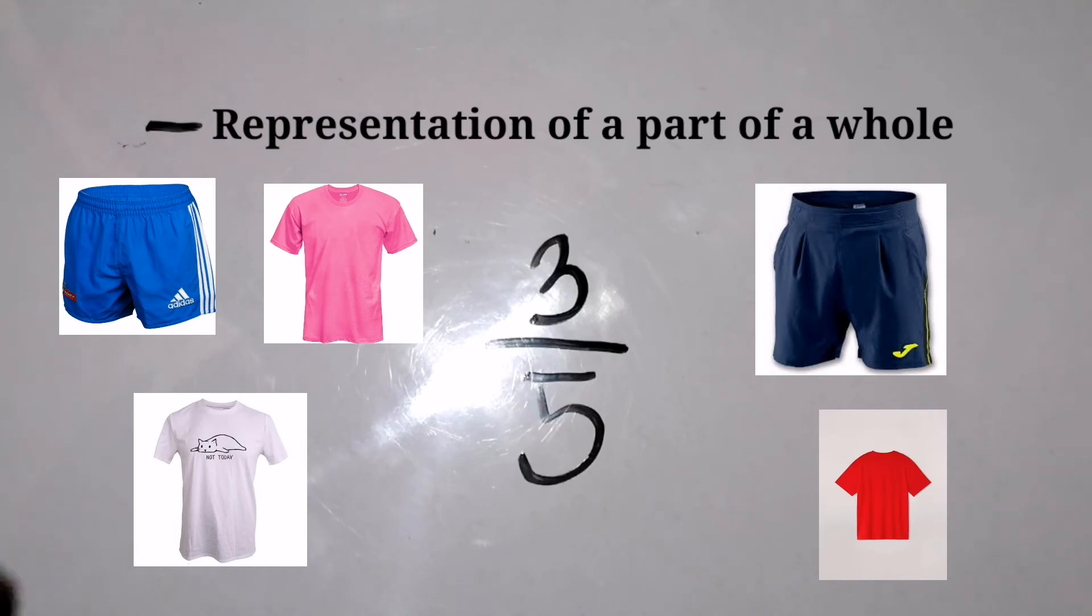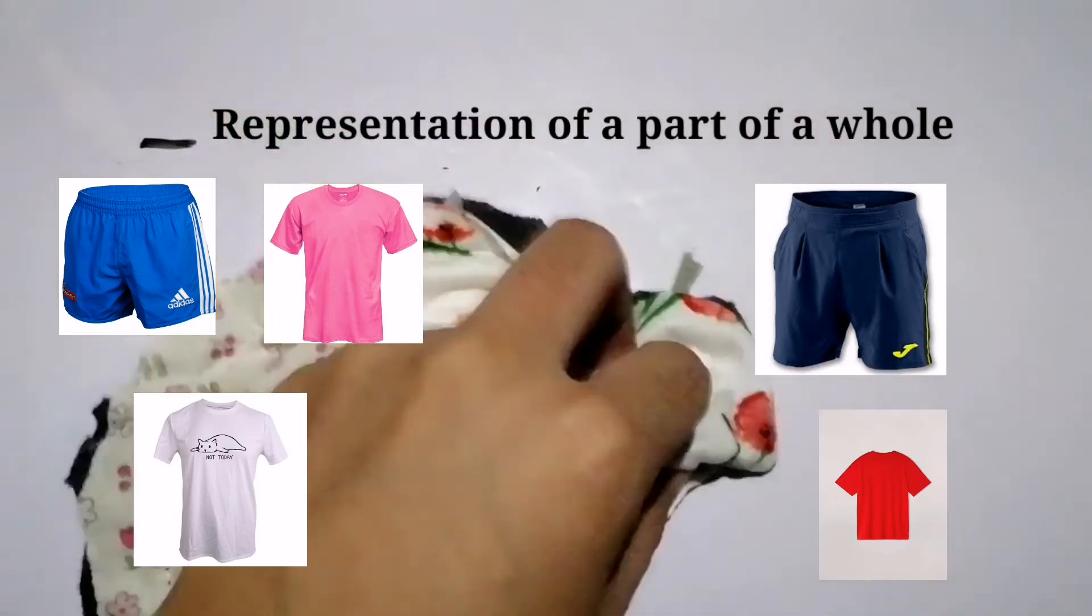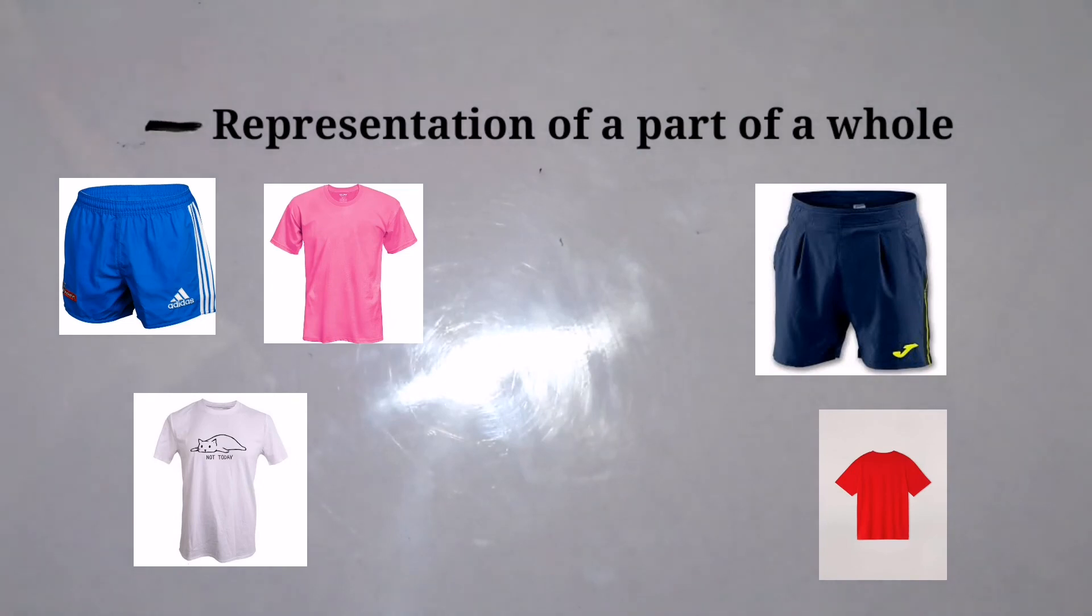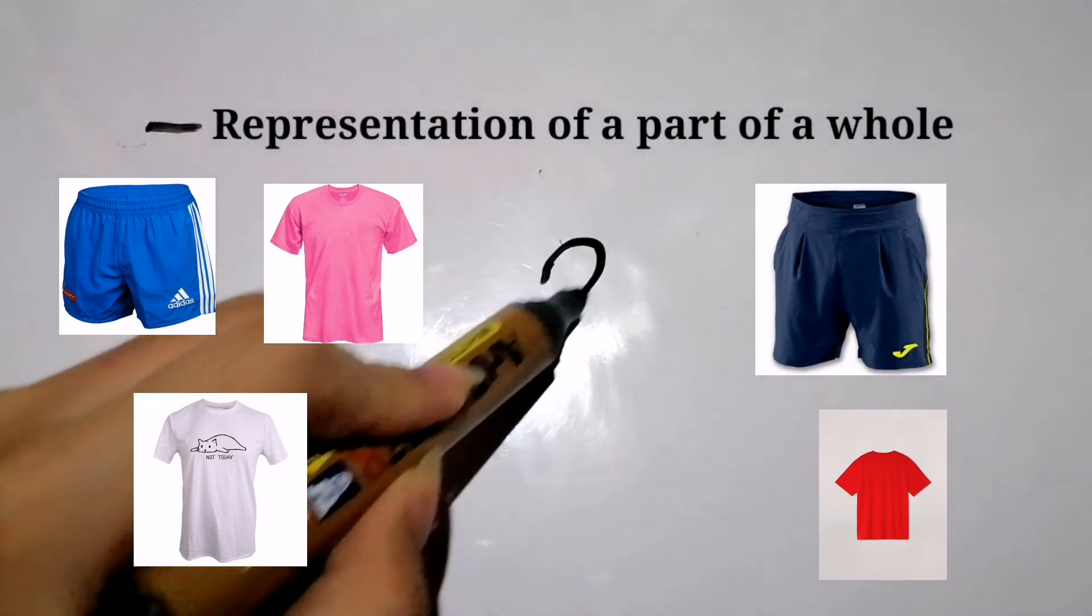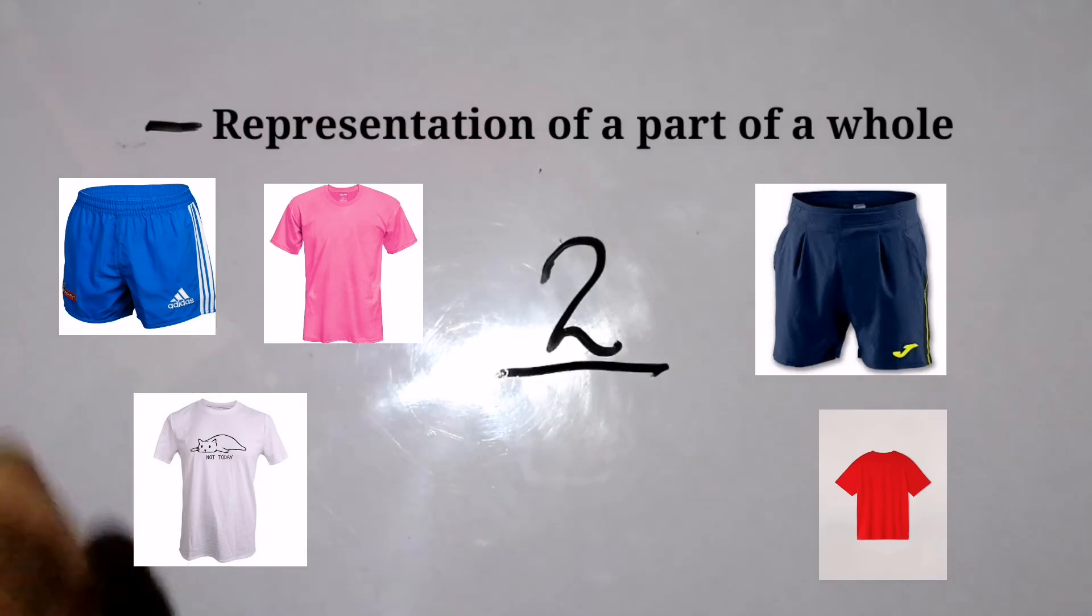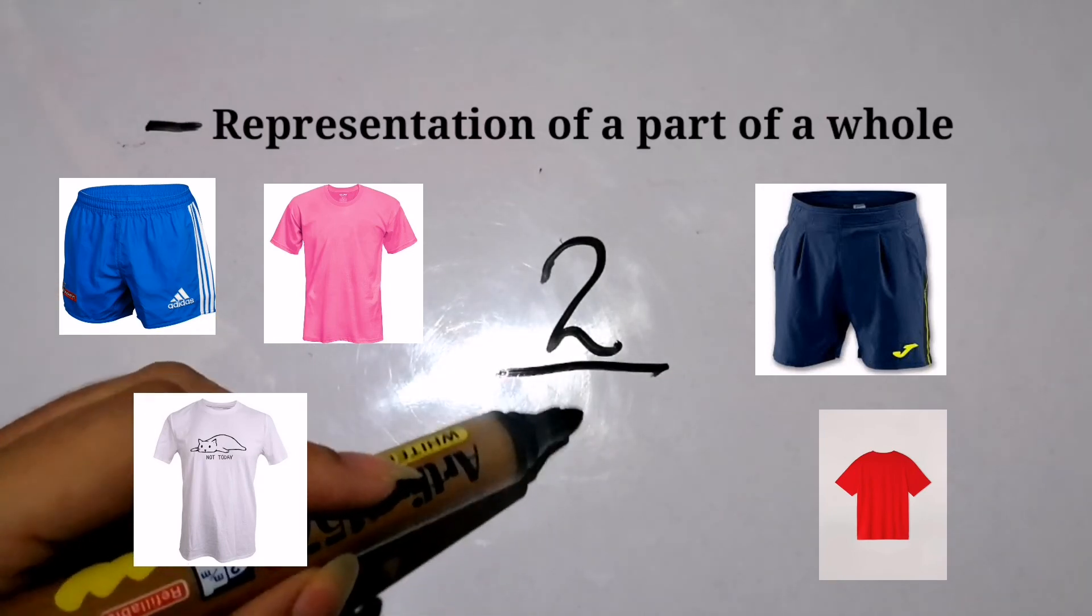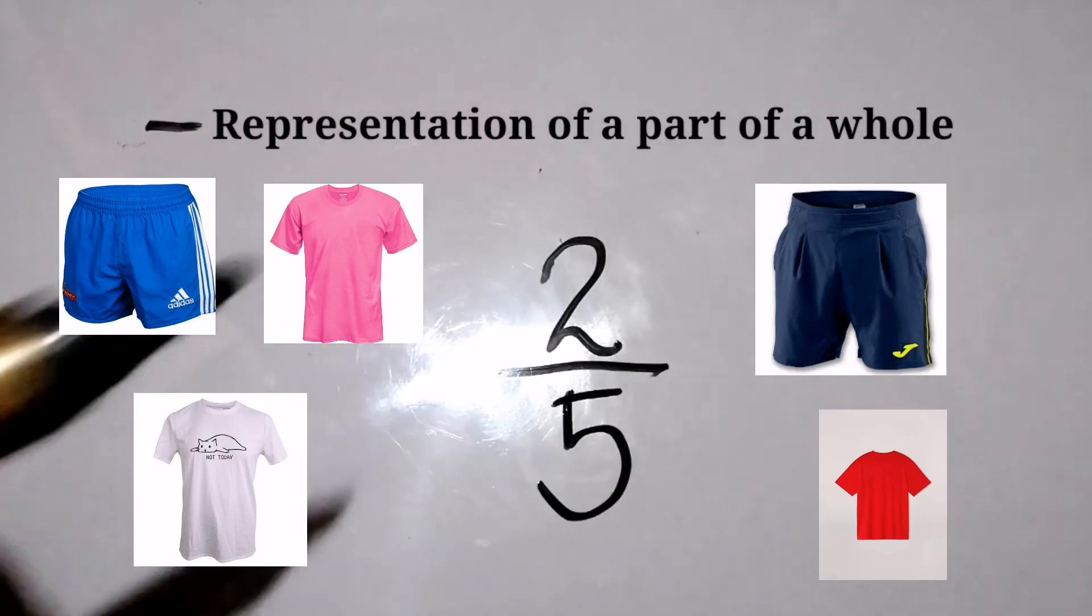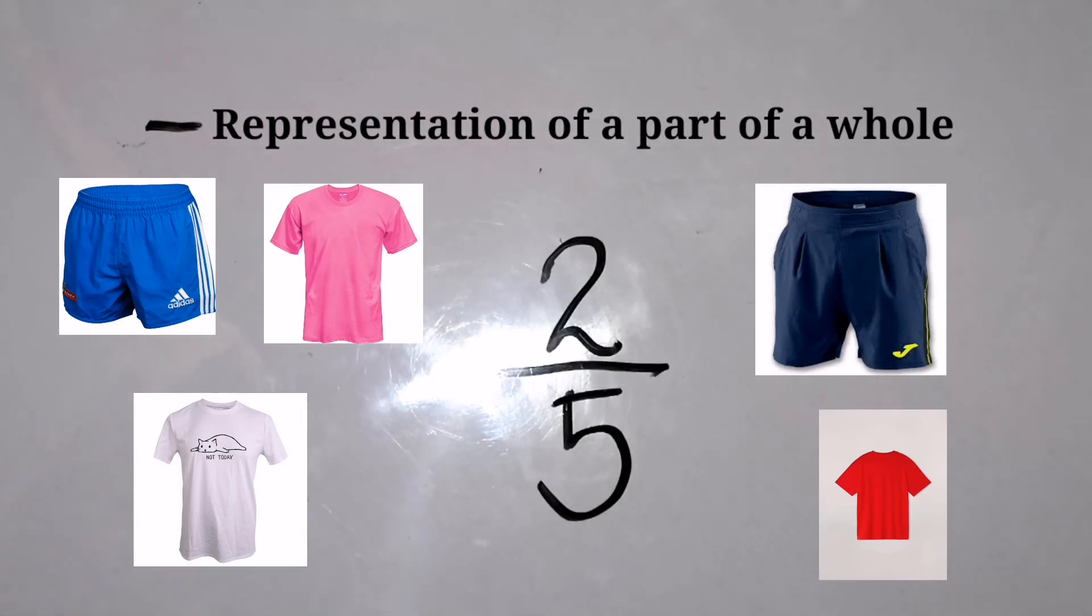Same thing will happen for the fraction representing the number of shorts. Since here we have two shorts that we consider and we have a total of five clothes in that group, therefore two-fifths of the clothes is composed of shorts.